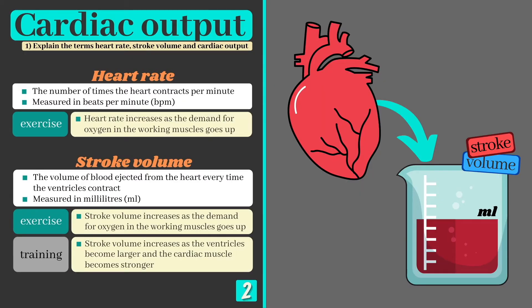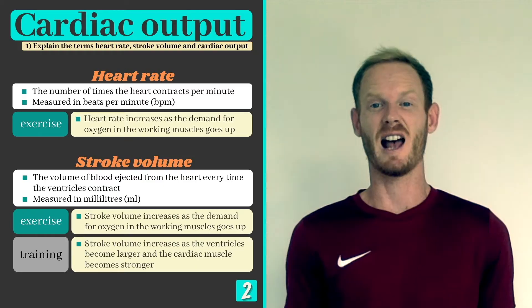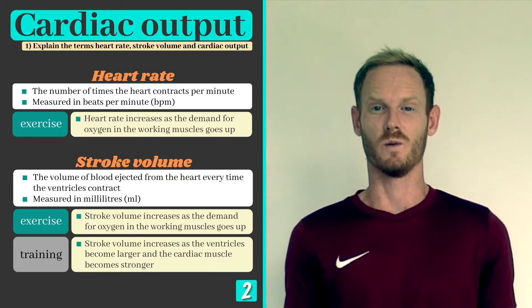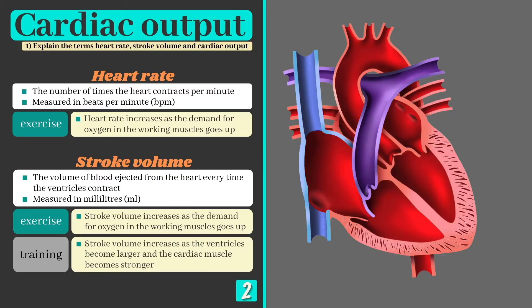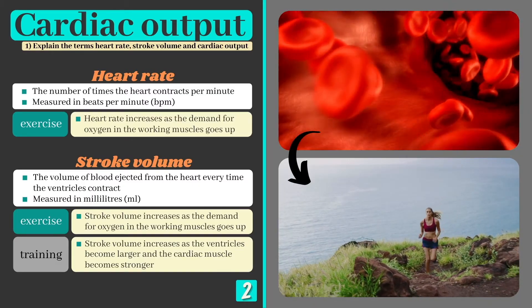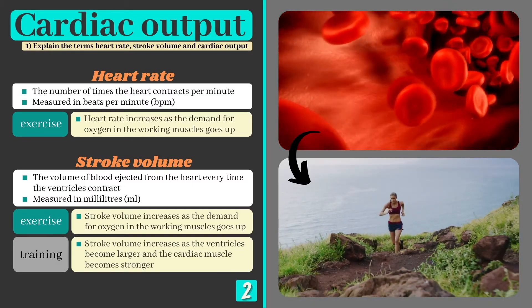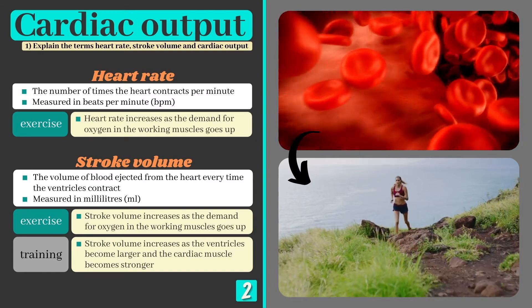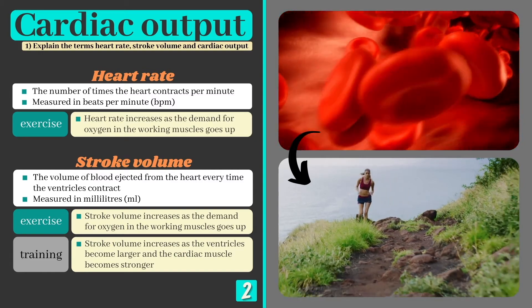Stroke volume is the volume of blood in millilitres ejected from the heart every time it contracts, and is determined by the size of our ventricles or heart chambers and the strength of our cardiac muscle. Long-term exercise stresses the heart, causing the ventricles to become larger and the cardiac muscle to contract more forcefully, thus increasing stroke volume. This enables trained athletes to deliver more oxygen to their working muscles, leading to an improvement in cardiovascular endurance or stamina.